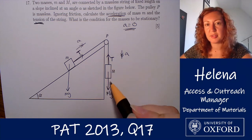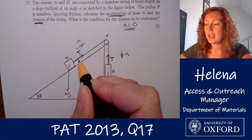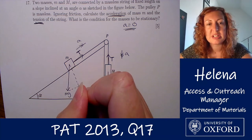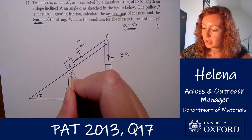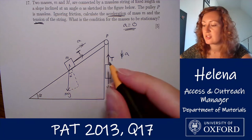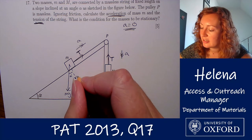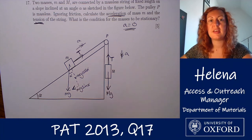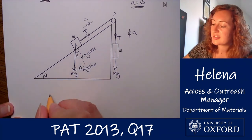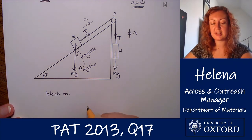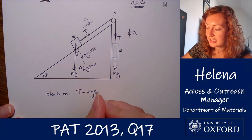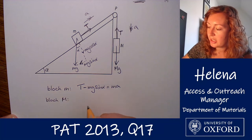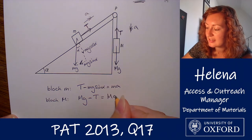We want to resolve the forces on both blocks separately. For block M it's straightforward — just the vertical direction. For block m on the slope, we resolve forces parallel to the incline. We need to split the weight into a component perpendicular and a component parallel to the plane. The angle is alpha, so the component perpendicular to the slope is mg cos alpha, and the component parallel to the slope acting down the plane is mg sin alpha. Applying Newton's second law, for block m: T minus mg sin alpha equals ma. For block M: Mg minus T equals Ma.